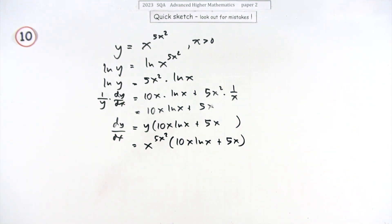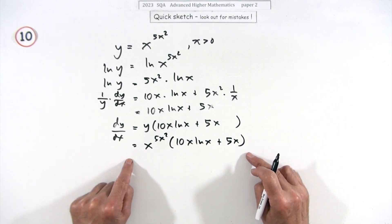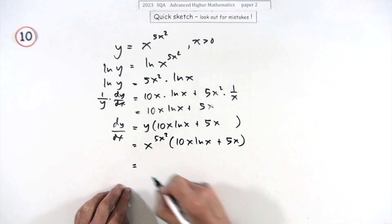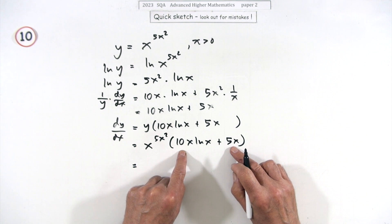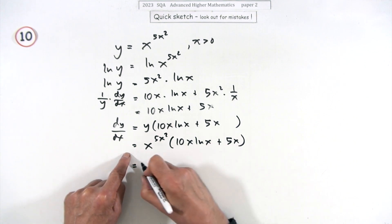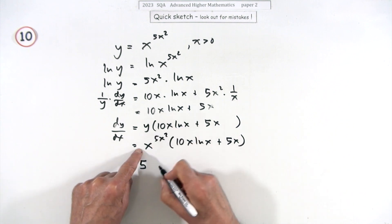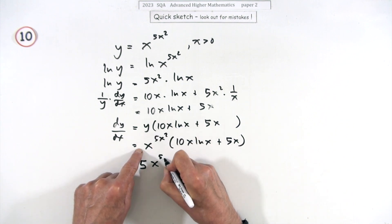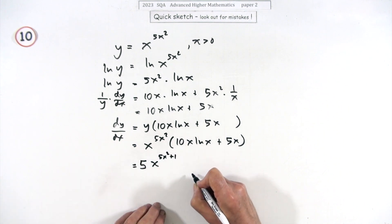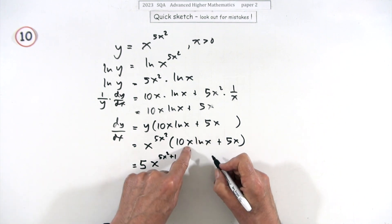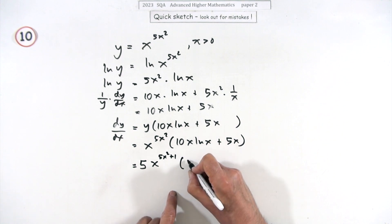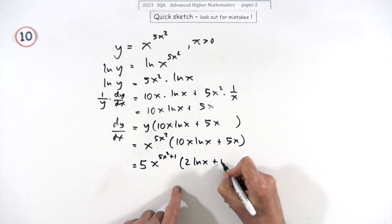You could go a stage further and take out 5x as a common factor. So taking out 5x would give you a 5 for a coefficient, but another x to stick onto this pile of x's, which would bump that up to 5x squared plus 1. And then having taken it out, you'd only be left with a 2 here, so 2 ln x, or ln x squared - 2 ln x will put down plus 1. But I don't think they want you to go as far as that one. I think that's the one that would do.